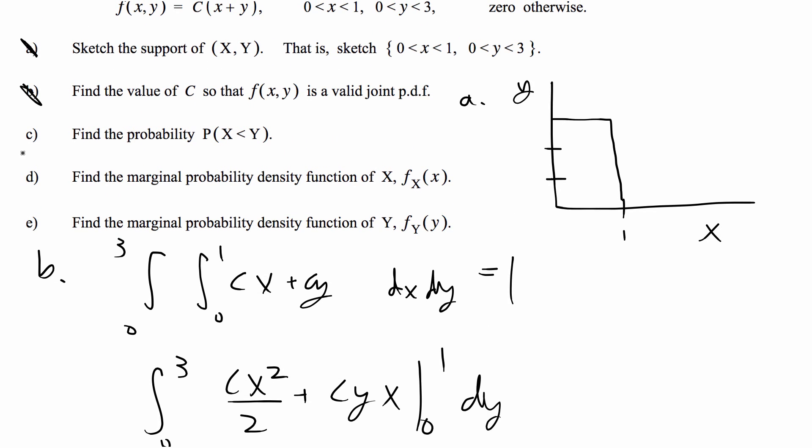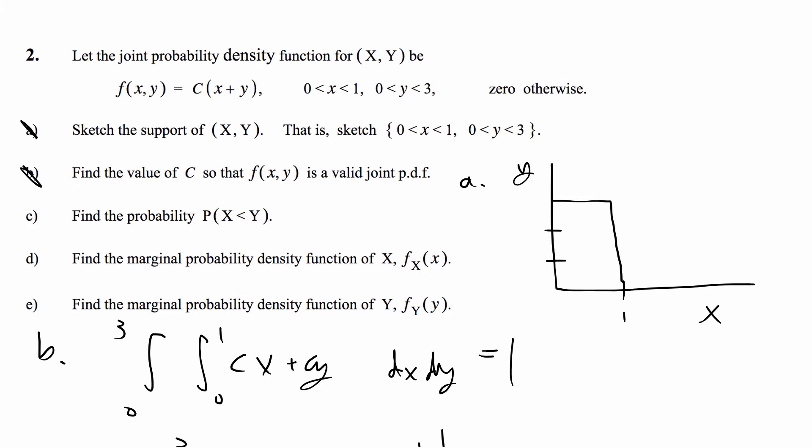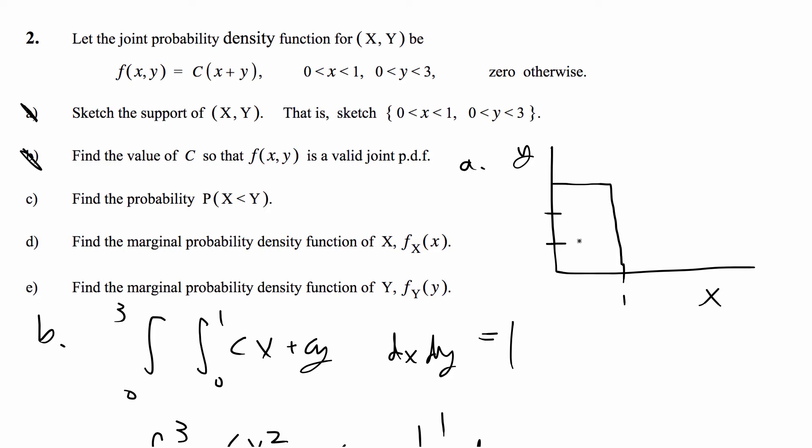We're done with B. Now C says find the probability that X is less than Y. We're going to go back to the support and now we don't want to integrate over the complete support because that would give us 1 as we just found in B, but we want to find only the integral that will give us when X is less than Y.